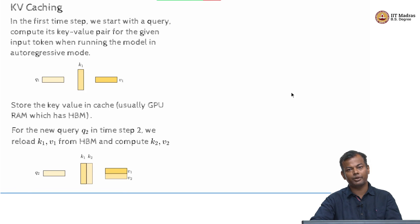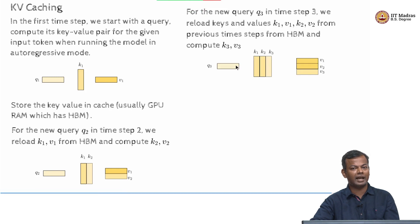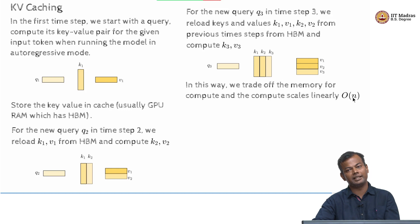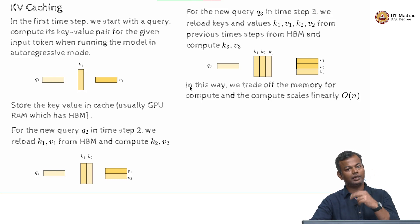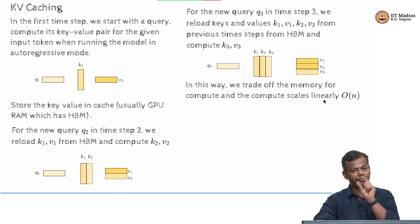Q1 is not needed here because now you are trying to compute a new representation for Q2. At time step 3, you are not going to compute K1, V1, K2, V2 - you just load them from the cache. The dark orange items are coming from the cache and only the light orange items are being computed. This way we trade memory for compute, and the compute scales linearly. Earlier at time step 1 you computed one key, one value; at time step 2, two keys, two values; time step 3, three keys, three values - giving O(n²) total. But now at every time step you are doing only one computation.